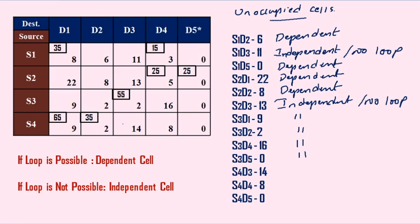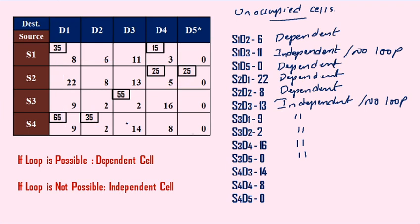Next one is S4, D3. I have two possibilities — upward direction, but no more possibilities. Going left, further left — stop — then upward direction, right side, down, and right — not possible. So loop is not possible for S4, D3.